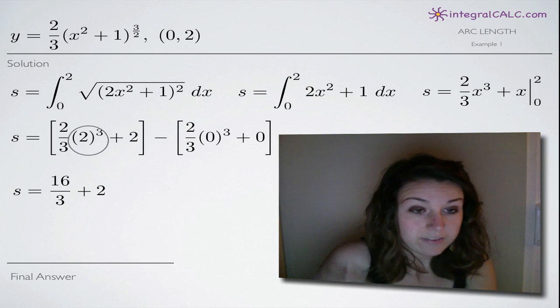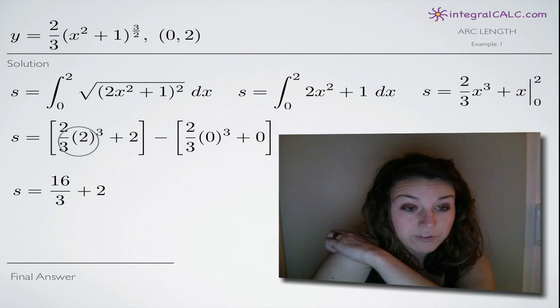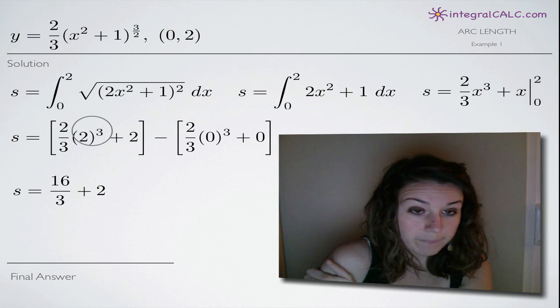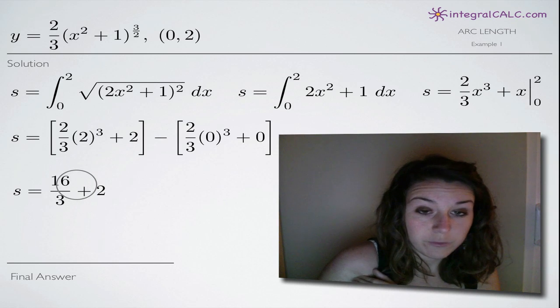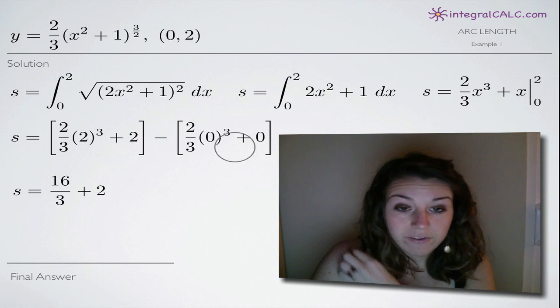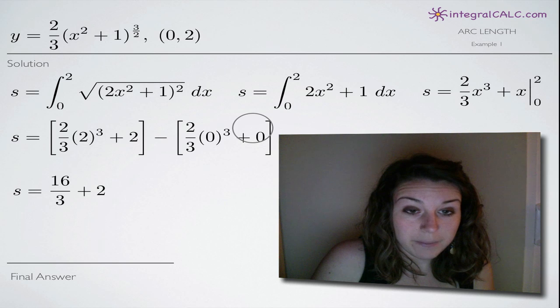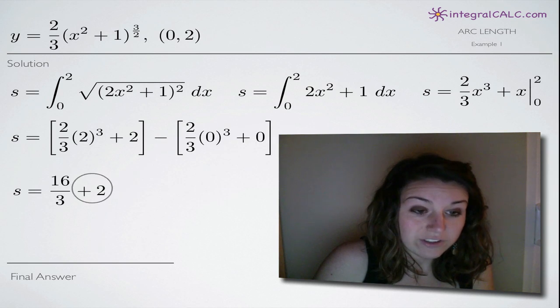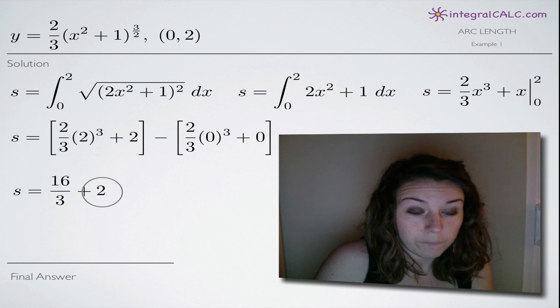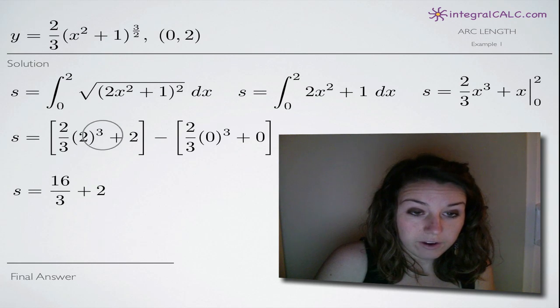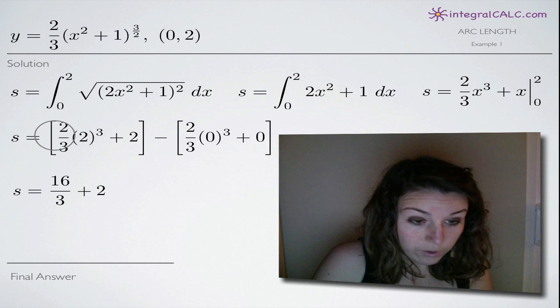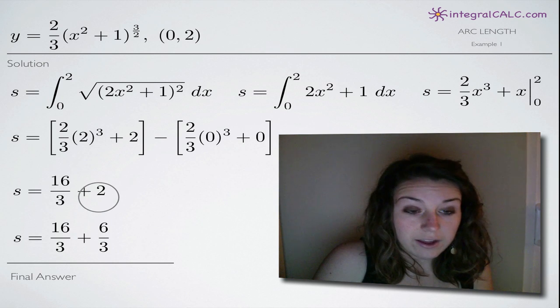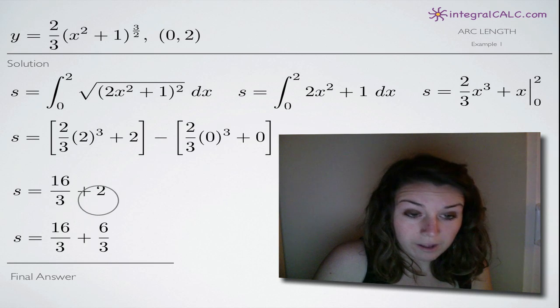So now all we have to do is simplify. 2 times 2 is 4 times 2 is 8. So we've got 8 times 2 thirds plus 2 gives us 16 thirds plus 2 and everything in the second half here is going to become 0. This whole thing here is going to go away. So we're just left with this 16 thirds plus 2 from the first half of our evaluation here. And so now we just need to combine these fractions.